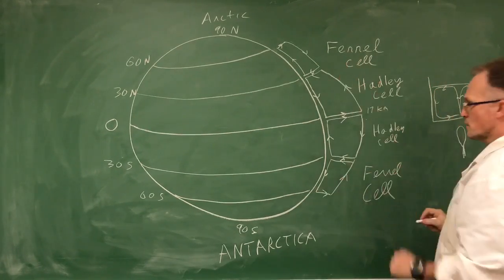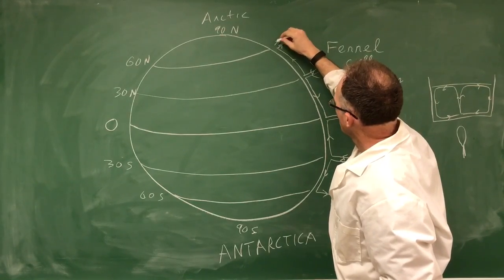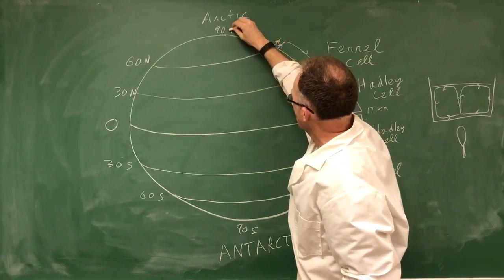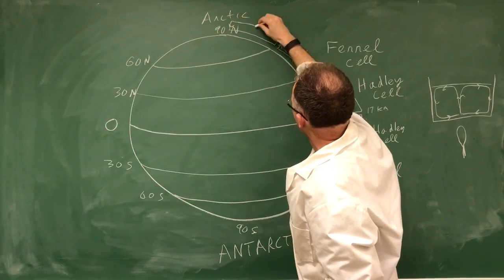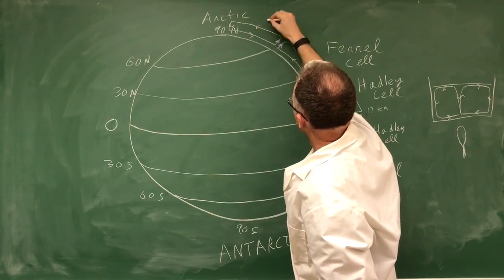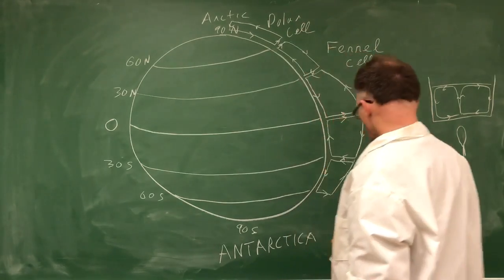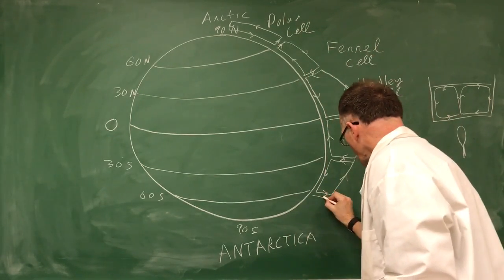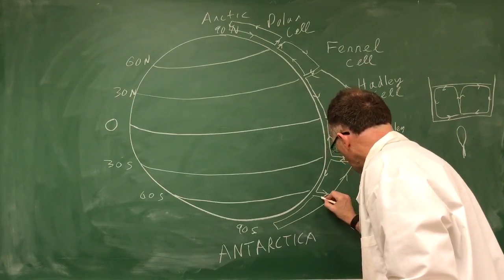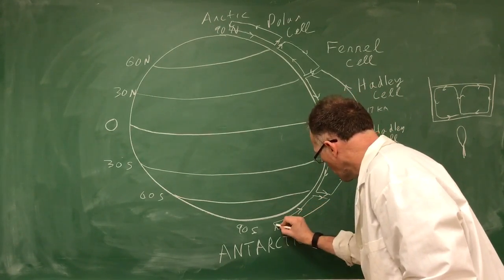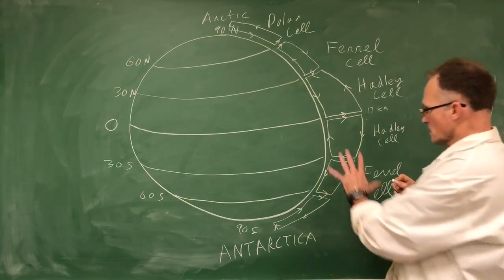This is the cross section pattern. Now again, you can guess what's going to happen here. The air comes up here, it has to come from here, it has to go over here and descend here. This is the polar cell. And we'll draw it over here too. Rises here, comes this way, comes down. Same thing.